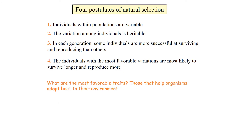These four postulates are the basis of the concept of natural selection. When each of them is fulfilled, natural selection is acting on a population. We can identify them in our HIV example and we can identify them in the finch example we'll be looking at in a moment. In that case, Peter and Rosemary Grant and their colleagues tested specifically each of these postulates and collected specific data sets to determine whether they were indeed in effect.